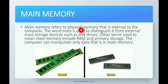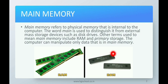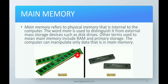Main memory or primary memory is of two types: RAM and ROM. Main memory is a physical memory that is internal — RAM and ROM are connected to the motherboard, so they are internal to the computer. The word 'main' is used to distinguish it from external mass storage devices like disk drives. The computer can manipulate only data that is in main memory.